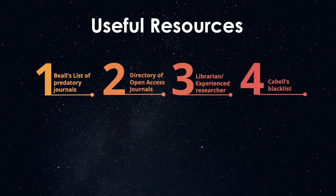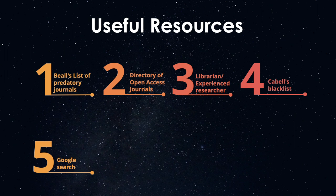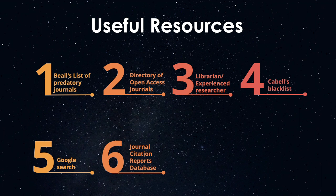Fourthly, Cabell's Blacklist, which is a list of deceptive and predatory journals accessible through a subscription. They also have a whitelist of what they call verified, reputable journals. Fifthly, Google search the title of the journal and the word predatory to see if there is any news about their connection. Sixthly, the Journal Citation Reports database, which can be used to verify information about the impact factor of a journal. Seventhly, searching indexes and databases like Medline or Web of Science — predatory journals are rarely indexed in reputable databases.